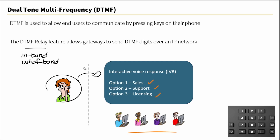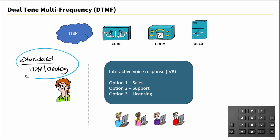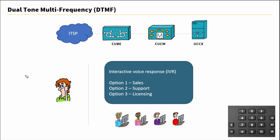Without DTMF relay, that digit press may not be recognized, so users cannot do simple tasks like choose an option off the IVR. Over standard PSTN networks — so this would be our TDM and analog networks — the transmission of these signals for DTMF is pretty straightforward. This is not the case when we're going over a Voice over IP network.